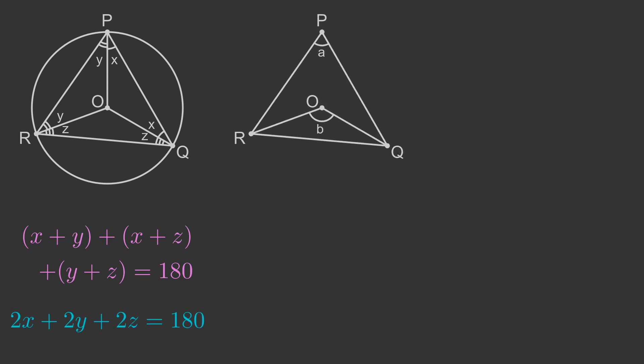This diagram shows the triangle with angles A and B from the original. This tells us that A equals X plus Y. This means that 2A equals 2X plus 2Y.